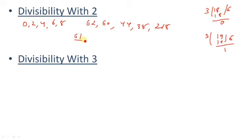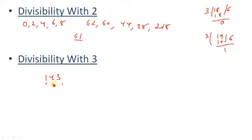Now divisibility by 3. Let us take an example — the number 143. To know whether a number is divisible by 3 or not, first we shall add all the digits of the number: 1 + 4 + 3 = 8. Since 8 is not divisible by 3, so 143 is not divisible by 3.